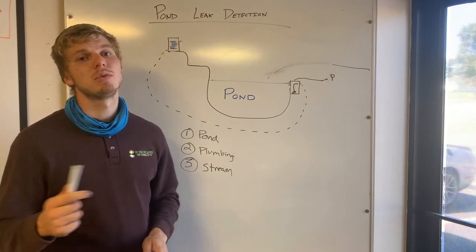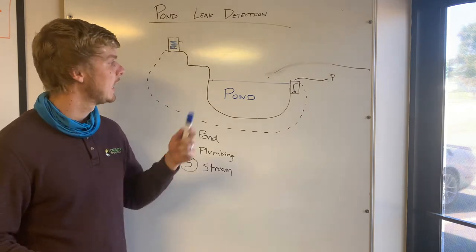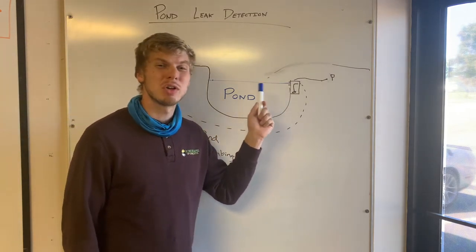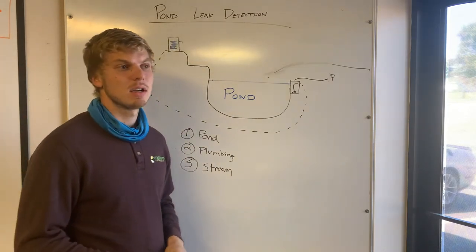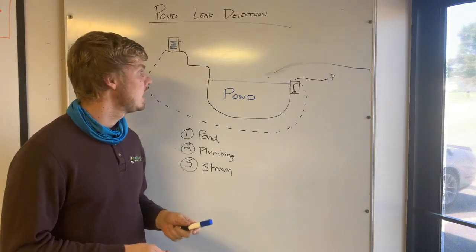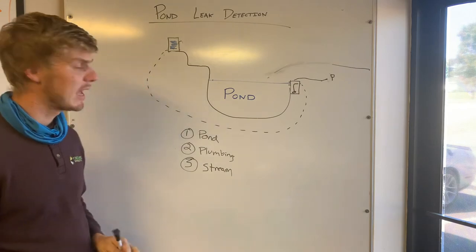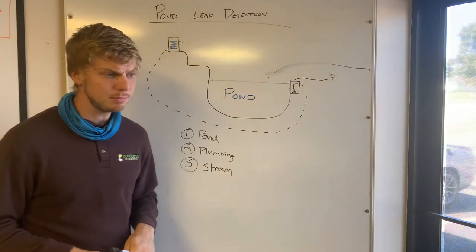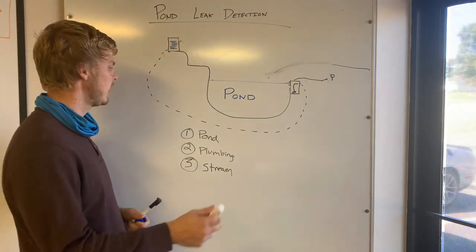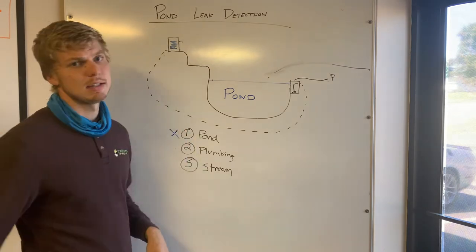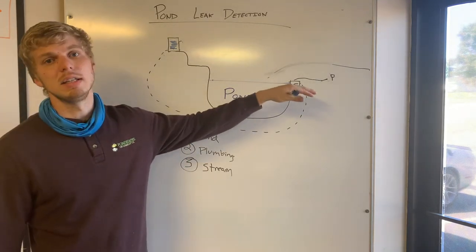Then you're going to wait 24 hours with no rain and come back out and take a picture of the same spot and compare the two photos. If the pond level has stayed the same that means we can rule out the pond as itself being a leak.